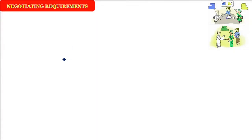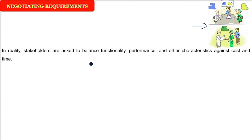Negotiating the requirements. Negotiating is all about talking, but talking to get a certain result, to get a certain conclusion. Whenever the discussion is going on, we would like the stakeholders to balance the functionality, to balance the performance, to balance the cost and time. And this is what we want from the stakeholders.